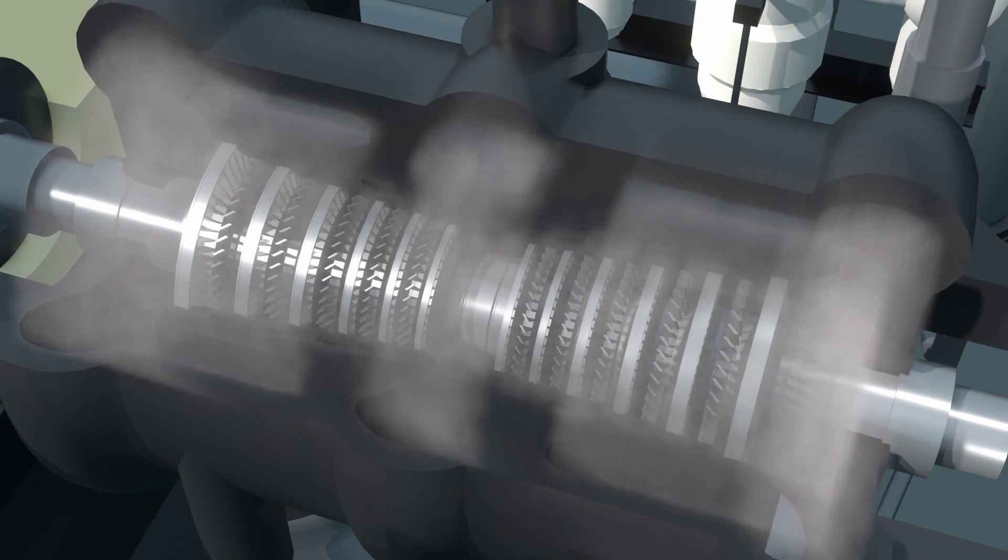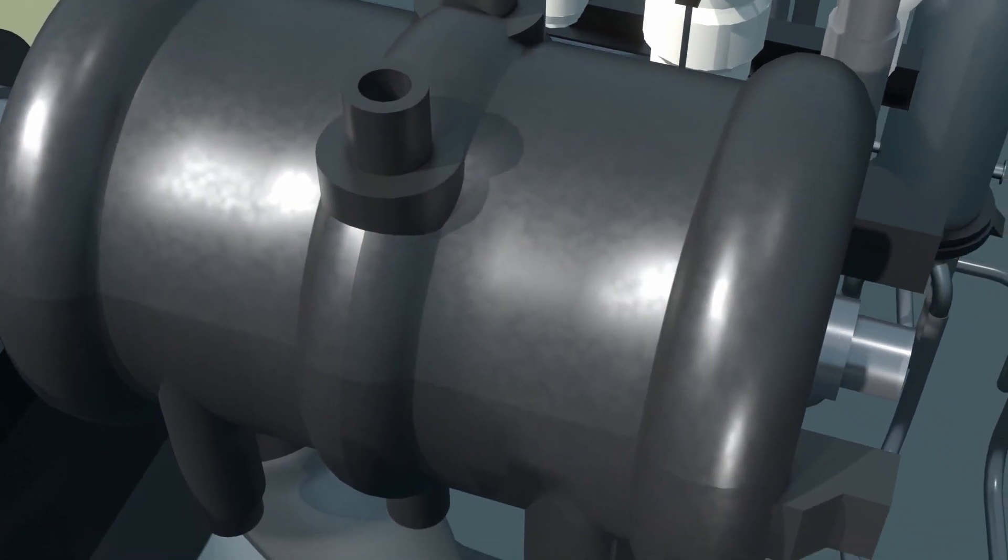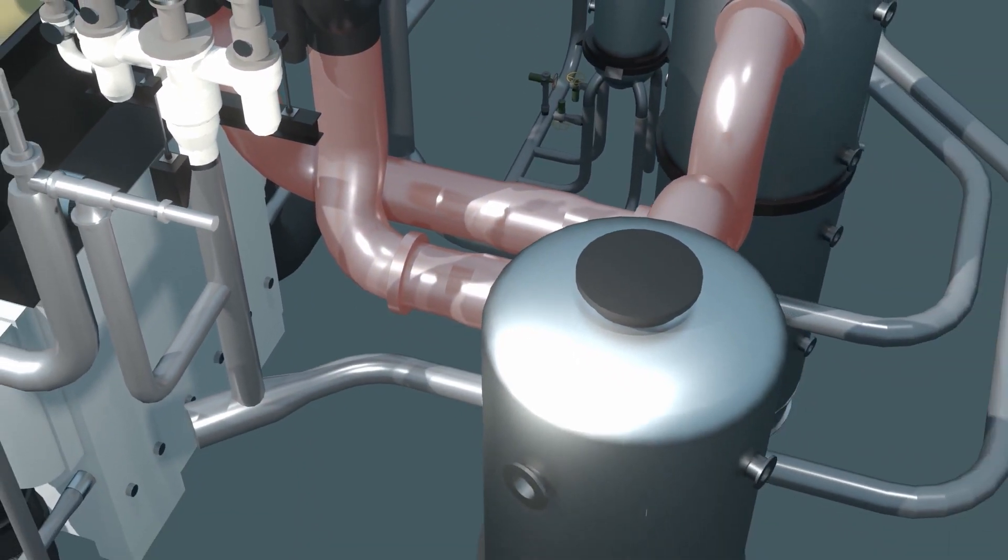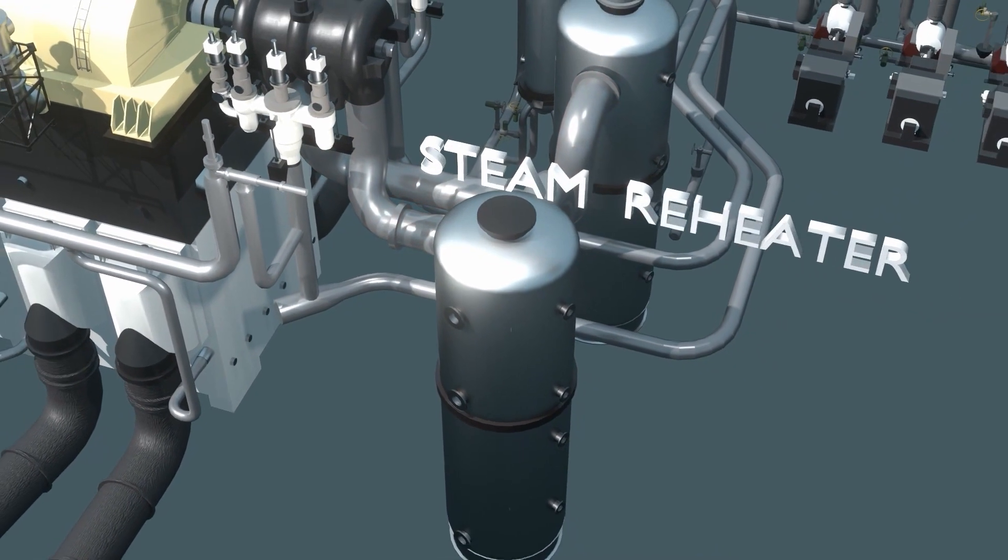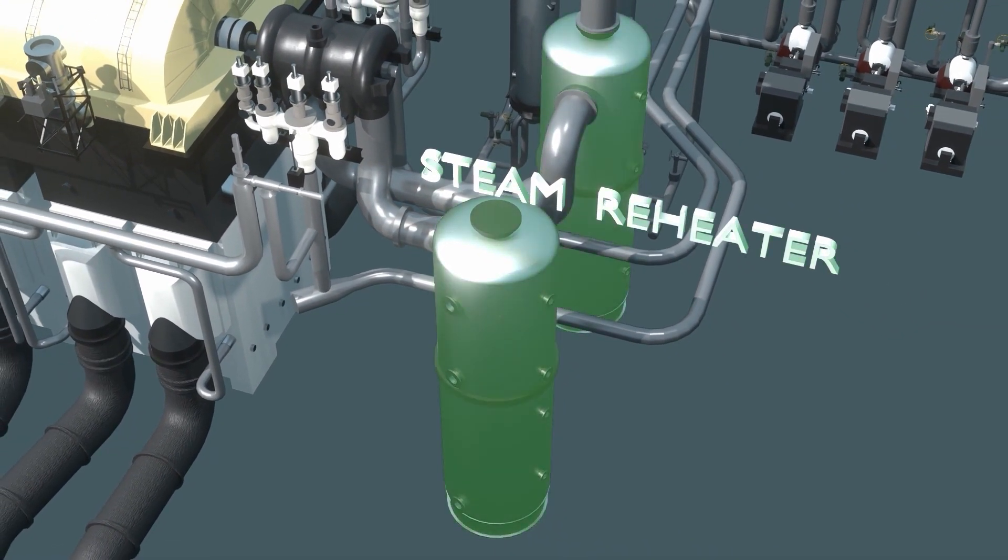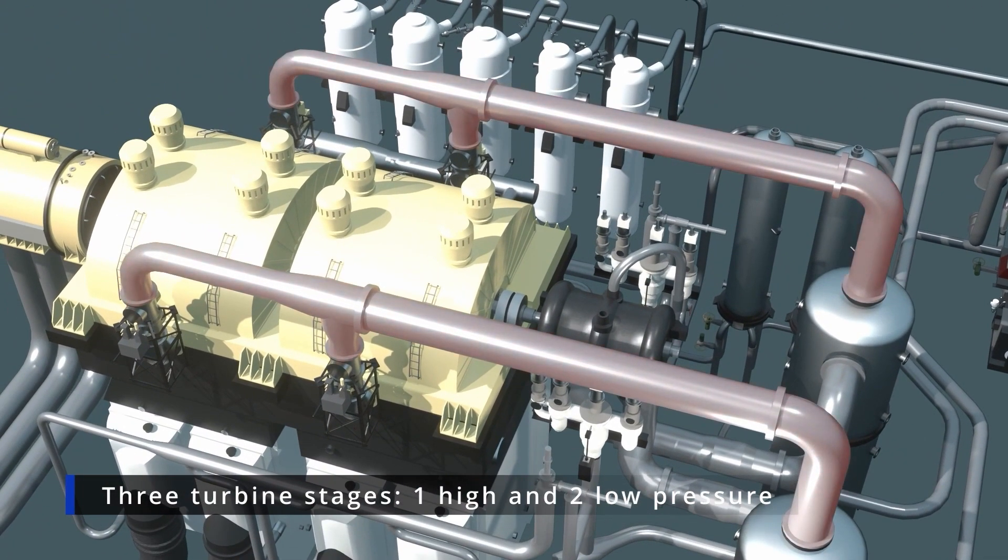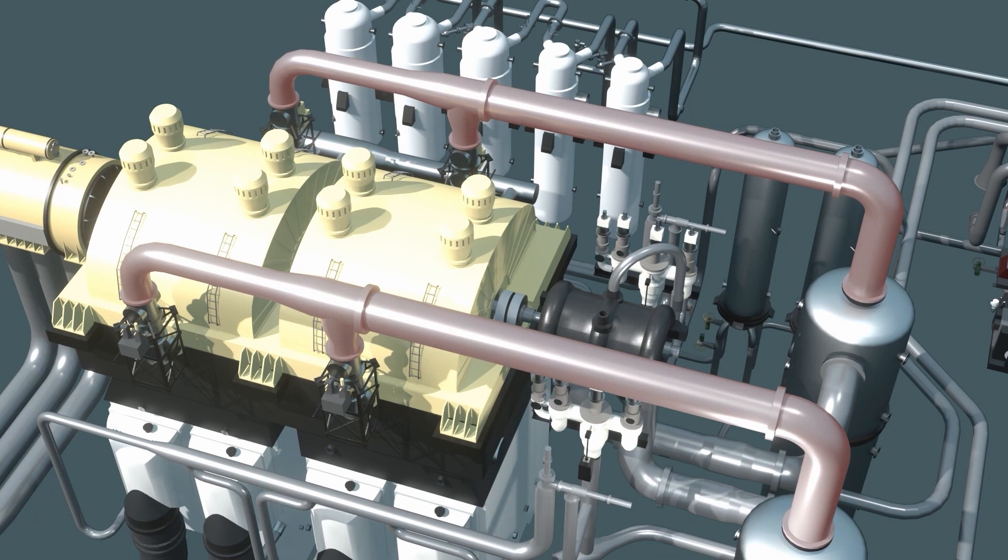It then passes into the steam separator and superheater, where water particles are separated, and the steam is heated. It then travels to the two low-pressure stages of the turbine, where it transfers the rest of its energy and spins the other turbine wheels. The blades of the impellers are much larger in the low-pressure stage of the turbine than in the high-pressure stage. This is how we make the most of the steam energy.